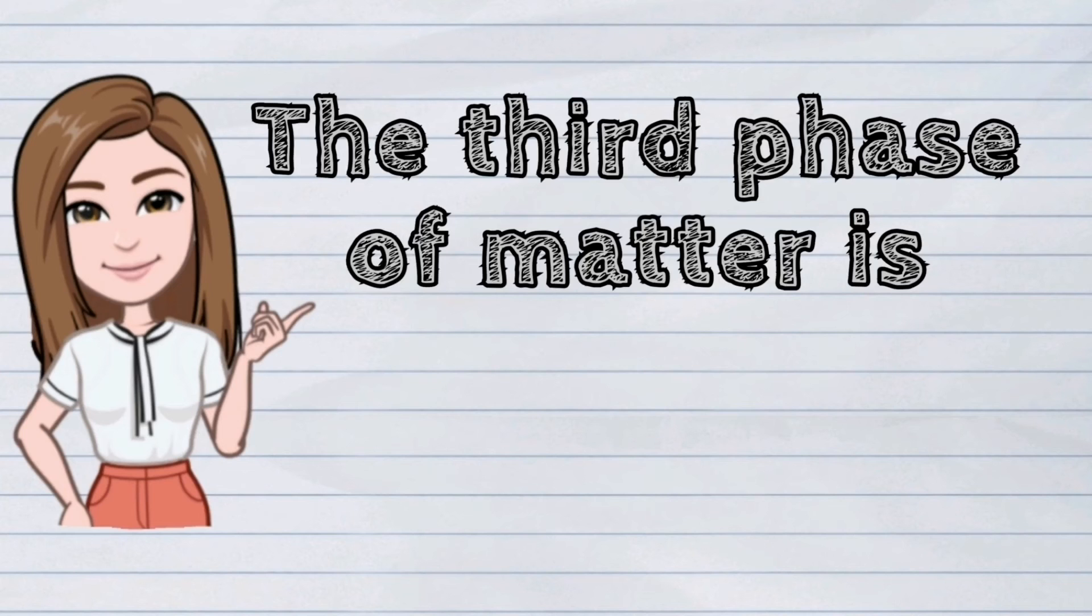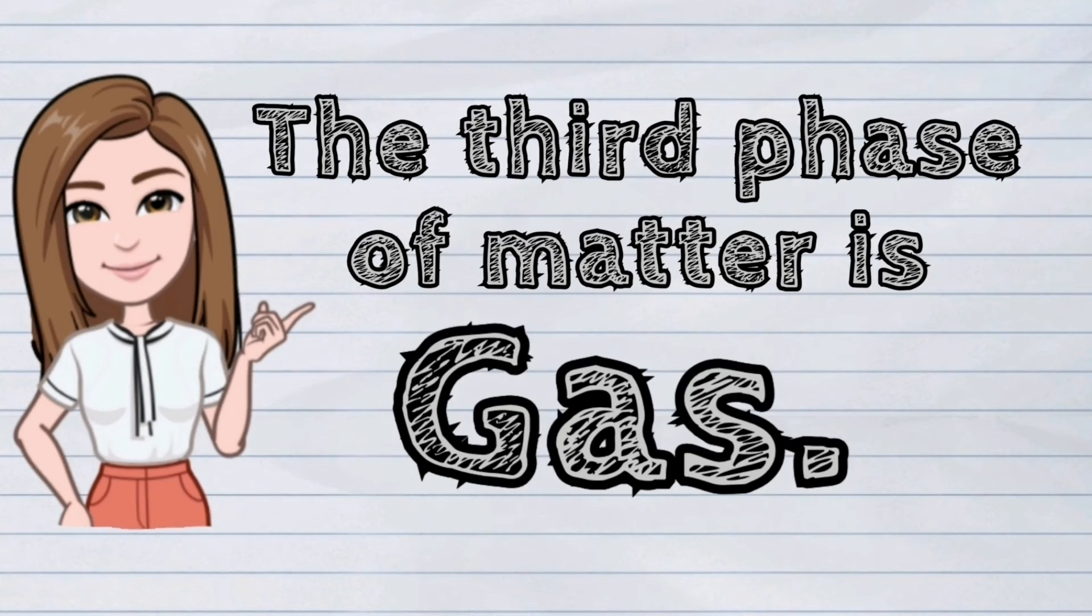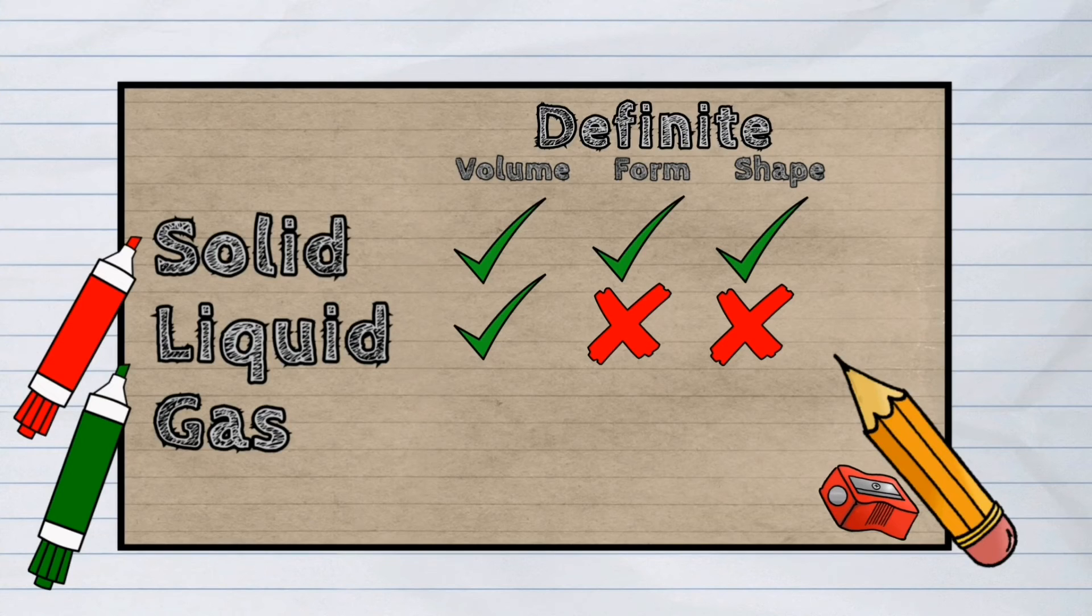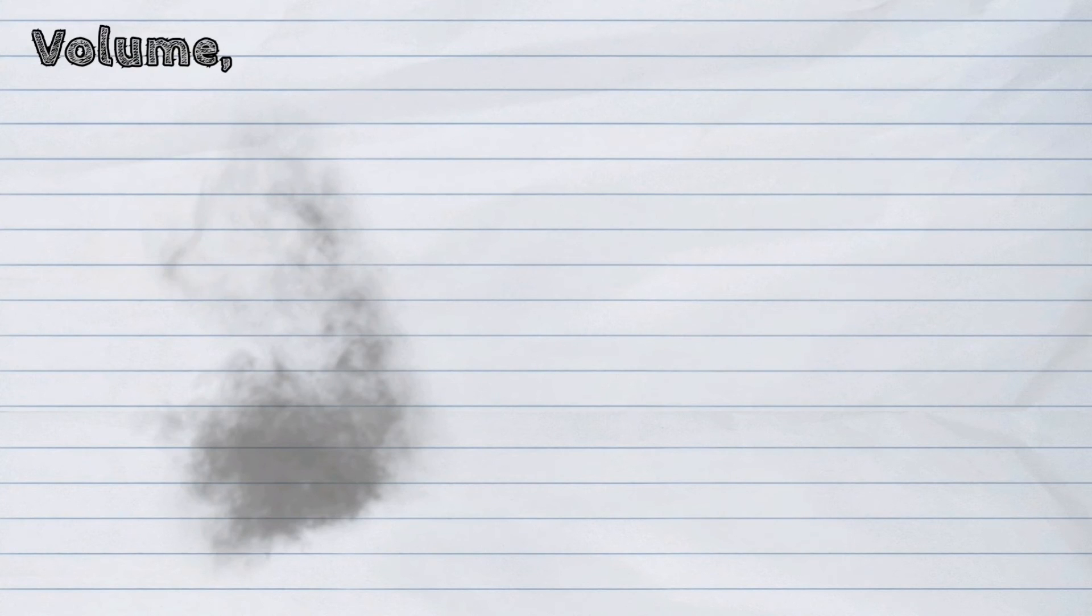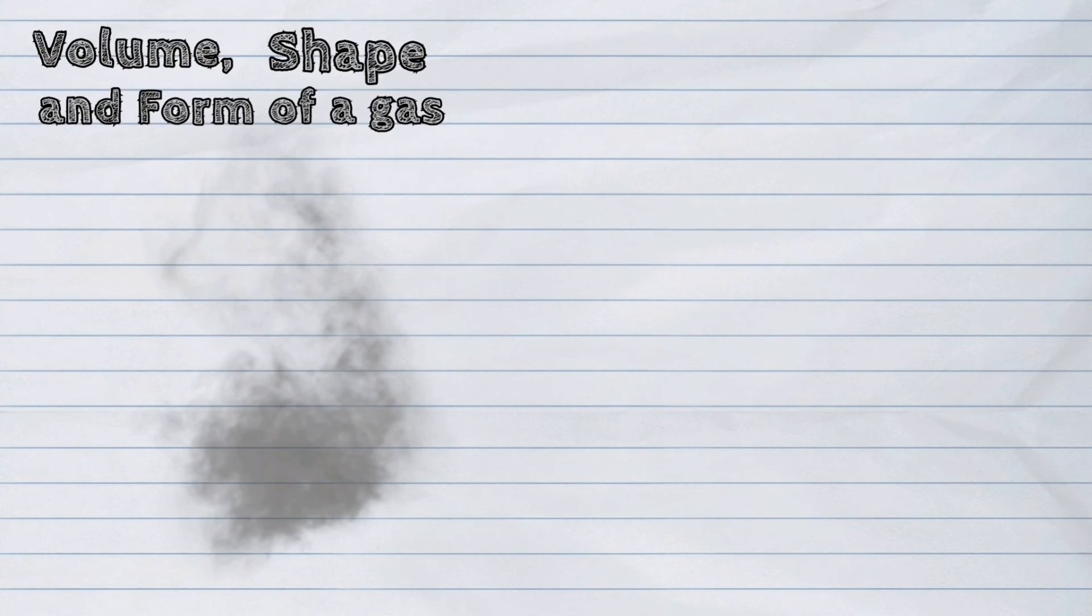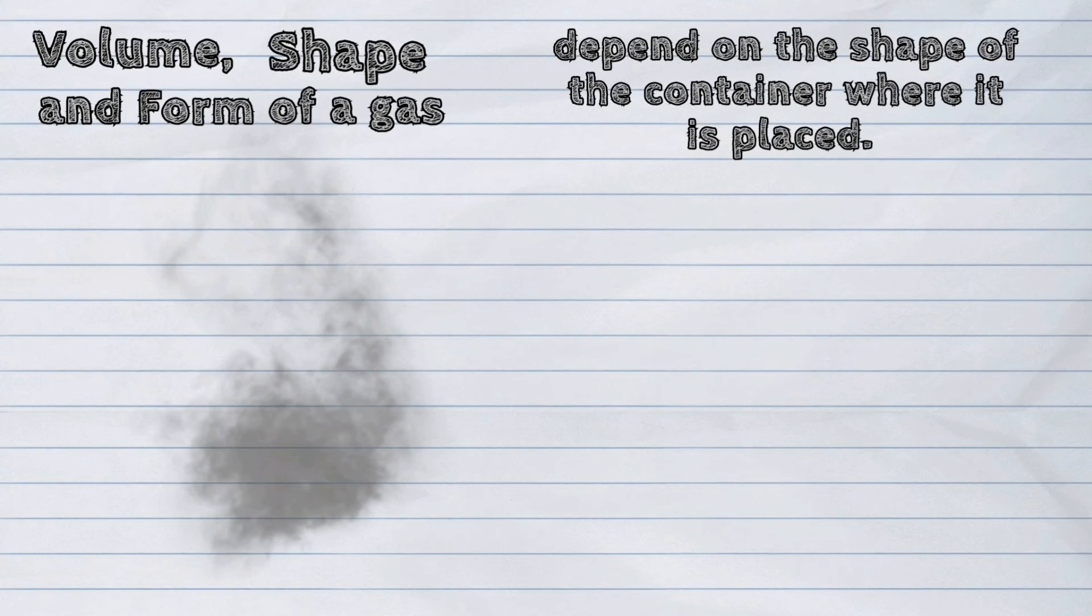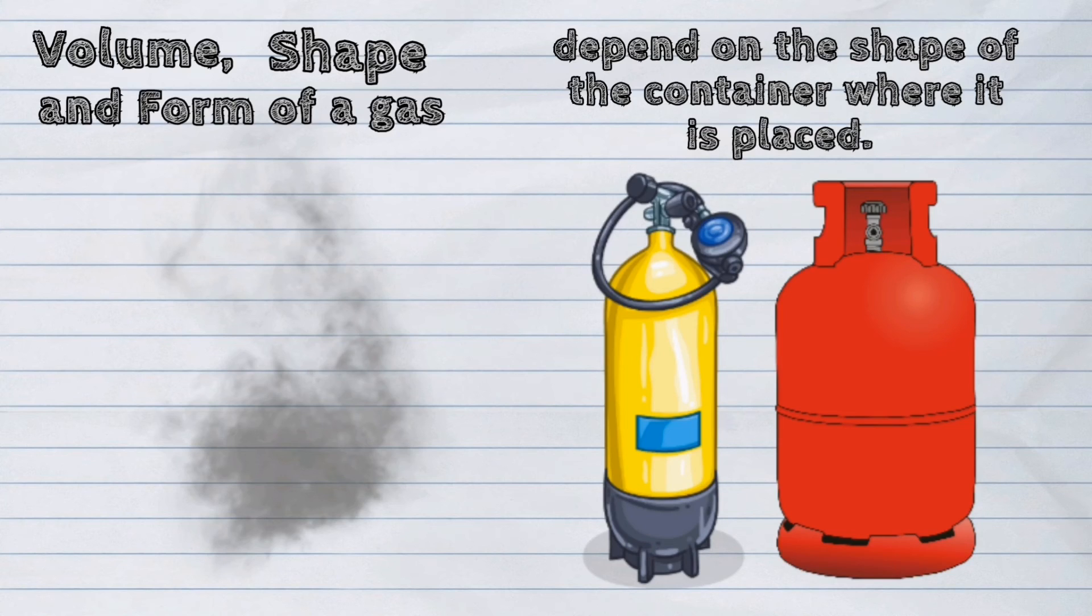The third phase of matter is gas. Gas have no definite volume, shape, and form. The volume, shape, and form of a gas depend on the shape of the container where it is placed.